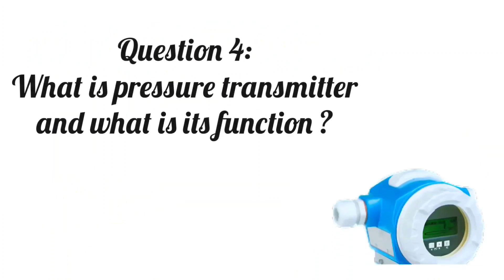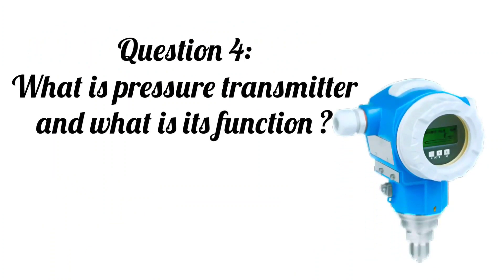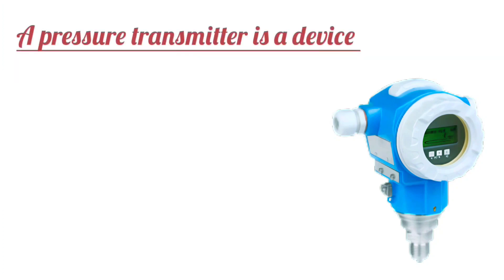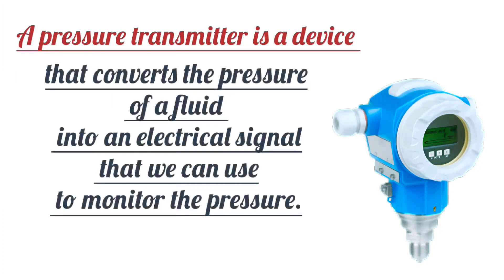Question 4: What is a pressure transmitter and what is its function? A pressure transmitter is a device that converts the pressure of a fluid into an electrical signal that we can use to monitor the pressure.